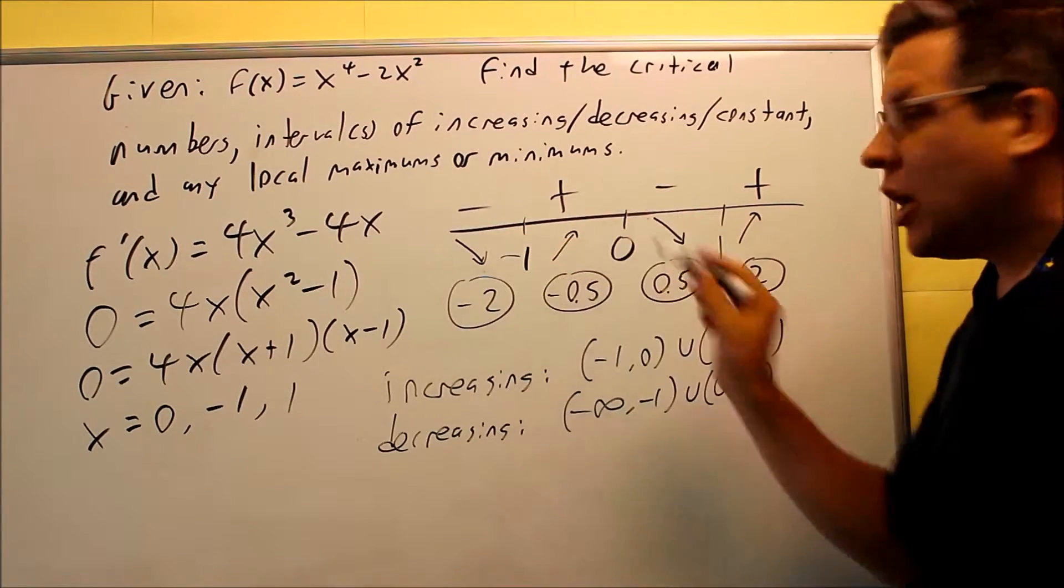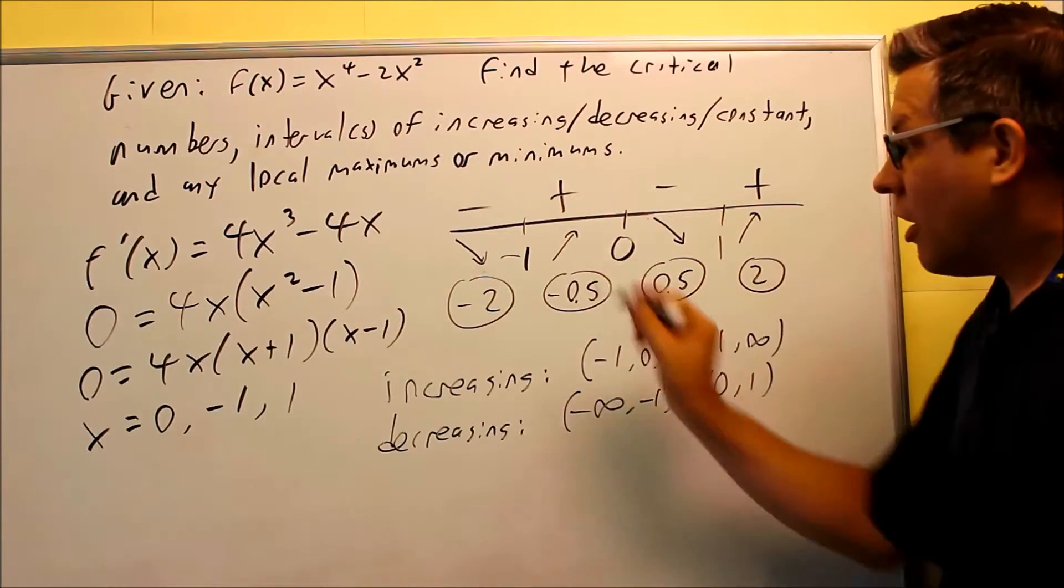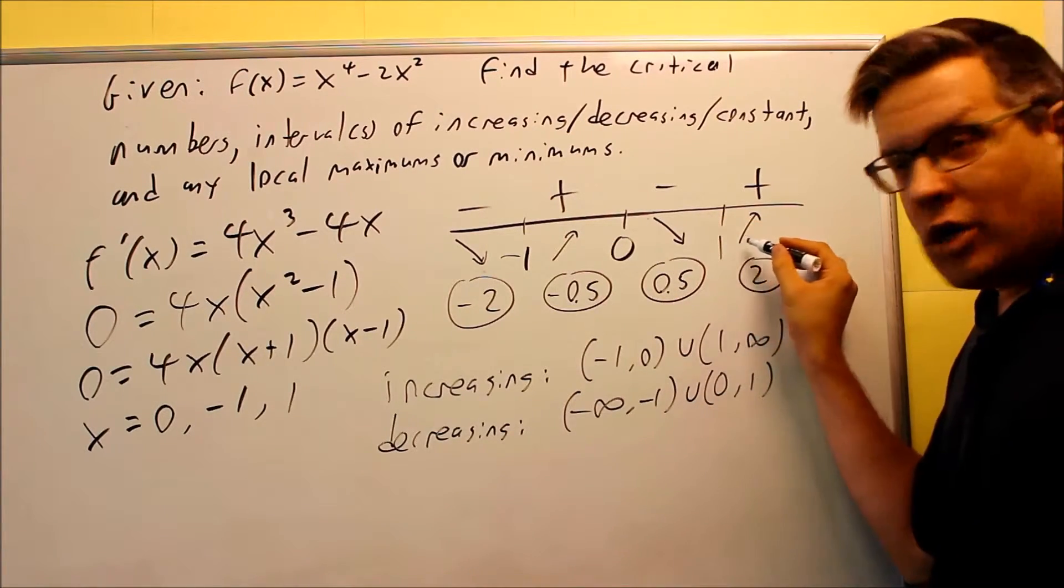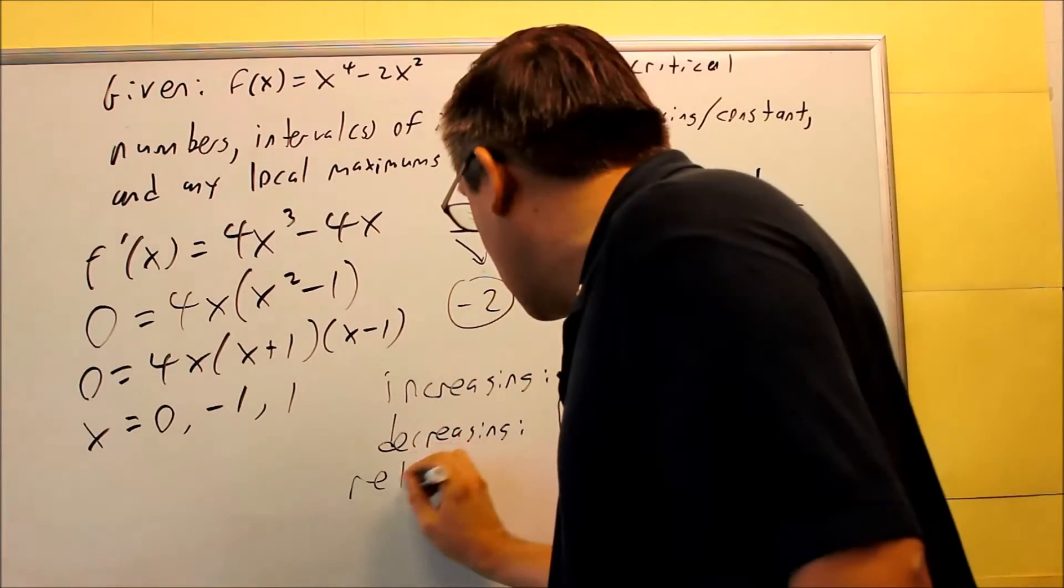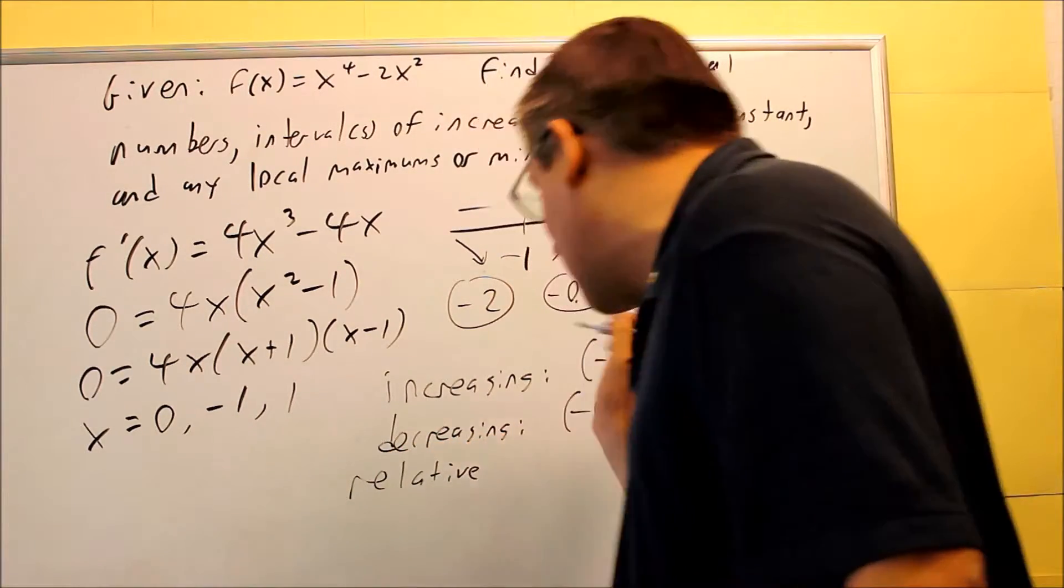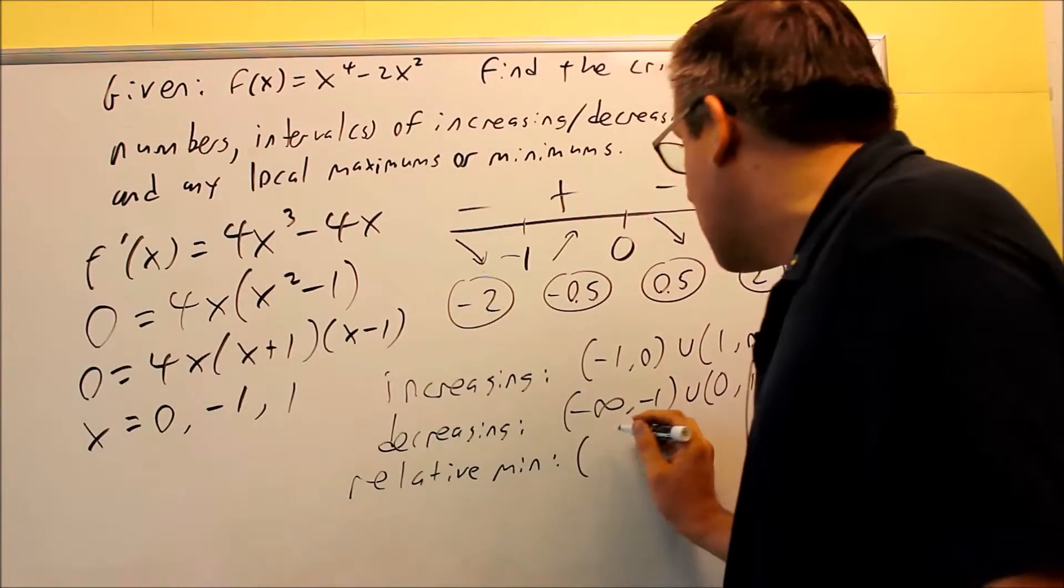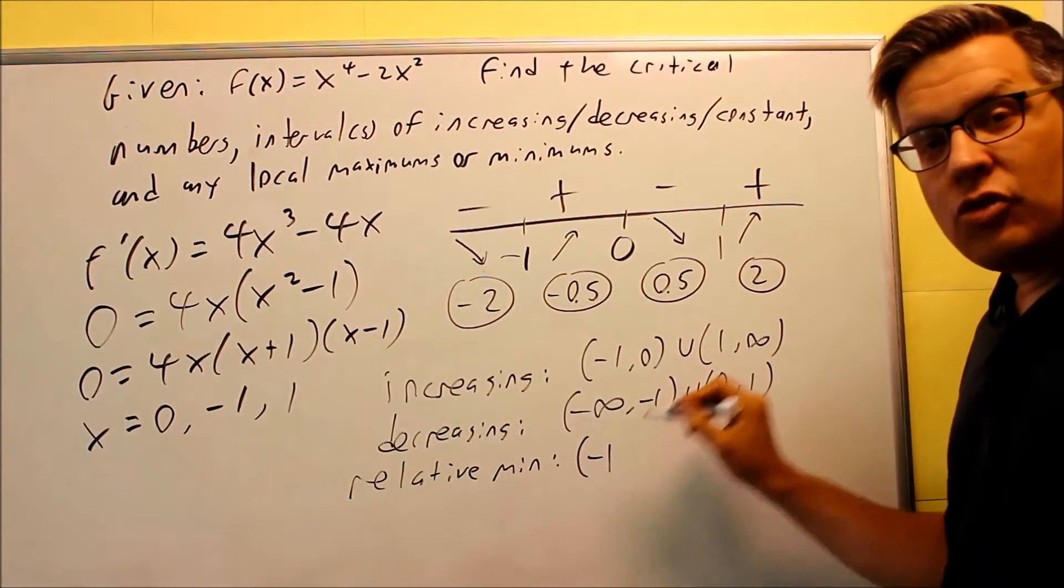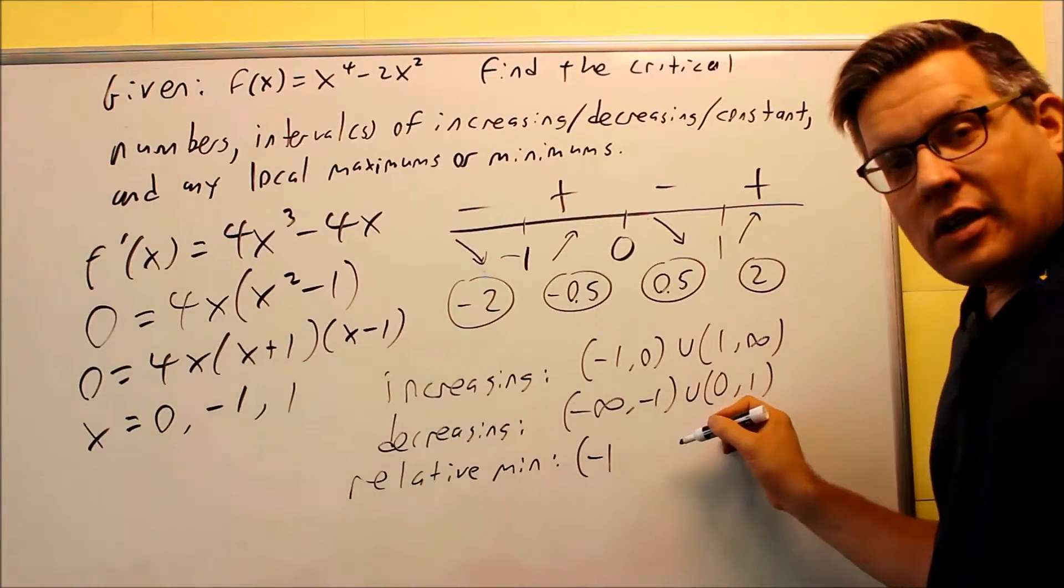Going down and going up, that means we're going to have a valley, so it means there should be a relative min there at negative 1. We also know there's going to be a relative min at 1, because again it's going down and it's going up. So I can indicate my relative or same thing as local, relative min is going to be at negative 1. Now, you do want to indicate these as coordinates, so if you want to get the exact coordinate from this one, you've got to put negative 1 back into the original function to get the actual y value.